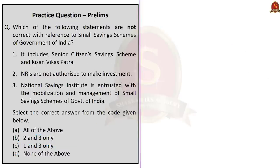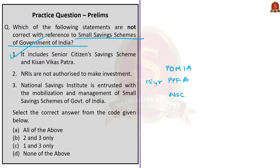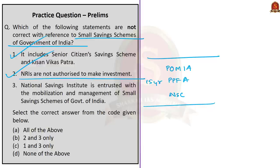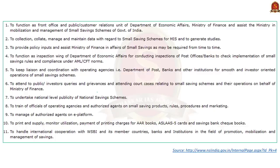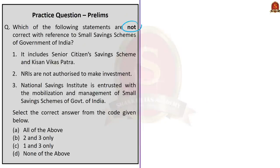Question on small savings schemes: Statement 1 — it includes Senior Citizen Savings Scheme and Kisan Vikas Patra — is correct. Statement 2 — NRIs are not authorized to make investments — is also correct. Statement 3 — National Savings Institute is entrusted with the mobilization and management of small savings schemes — is also correct. Since all statements are correct, the question asks for the not-correct statements, so the correct answer is option D: none of the above.